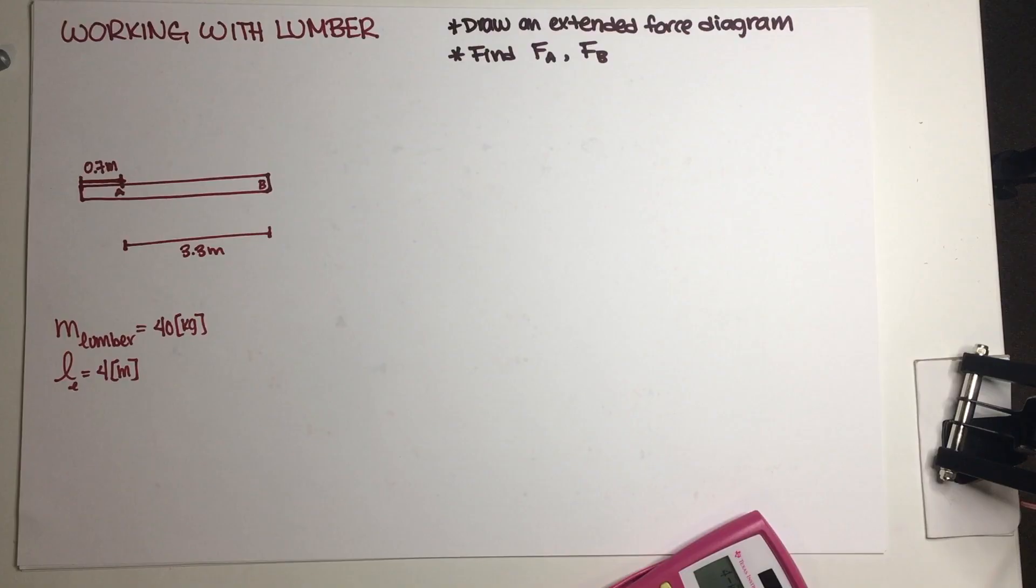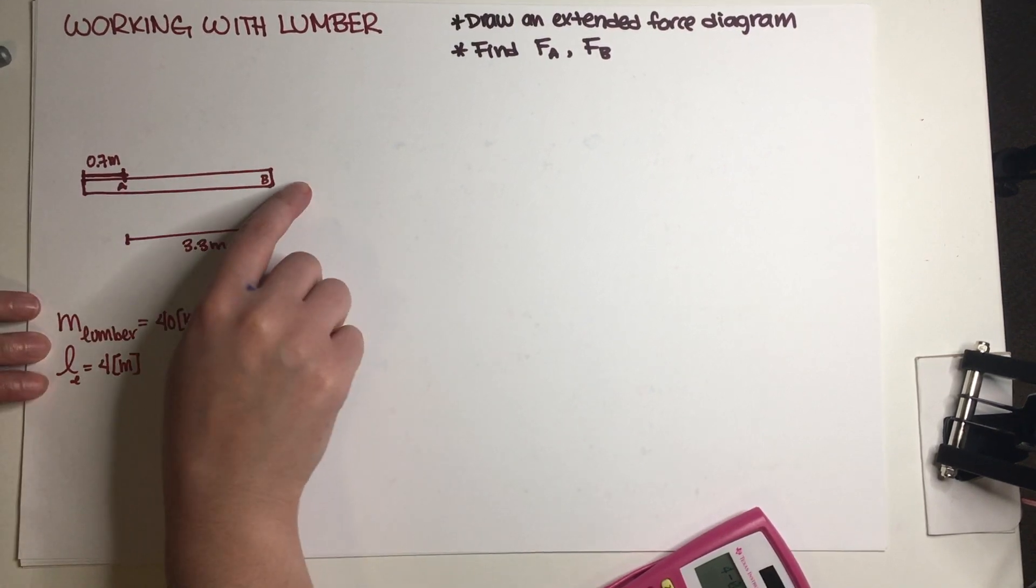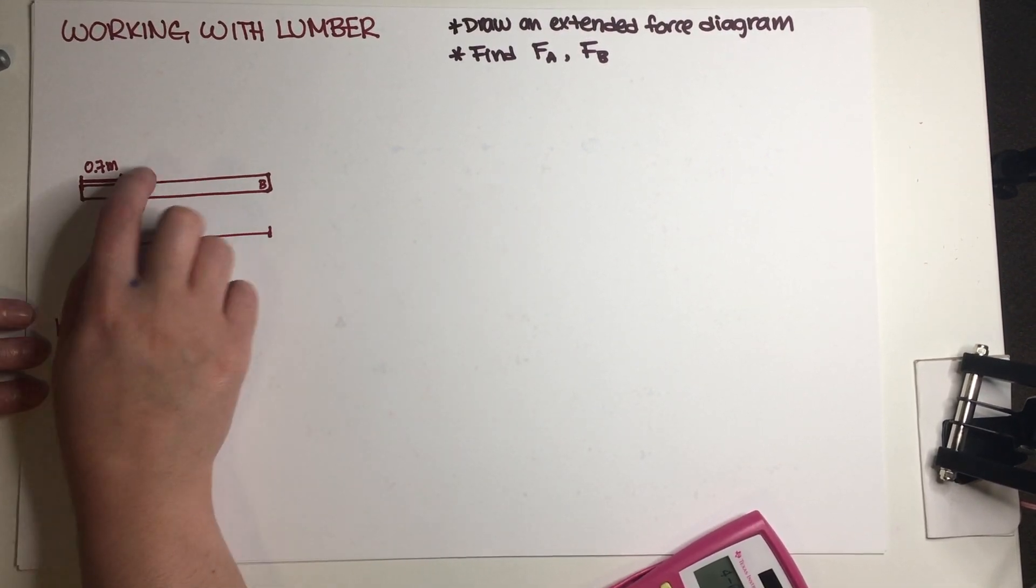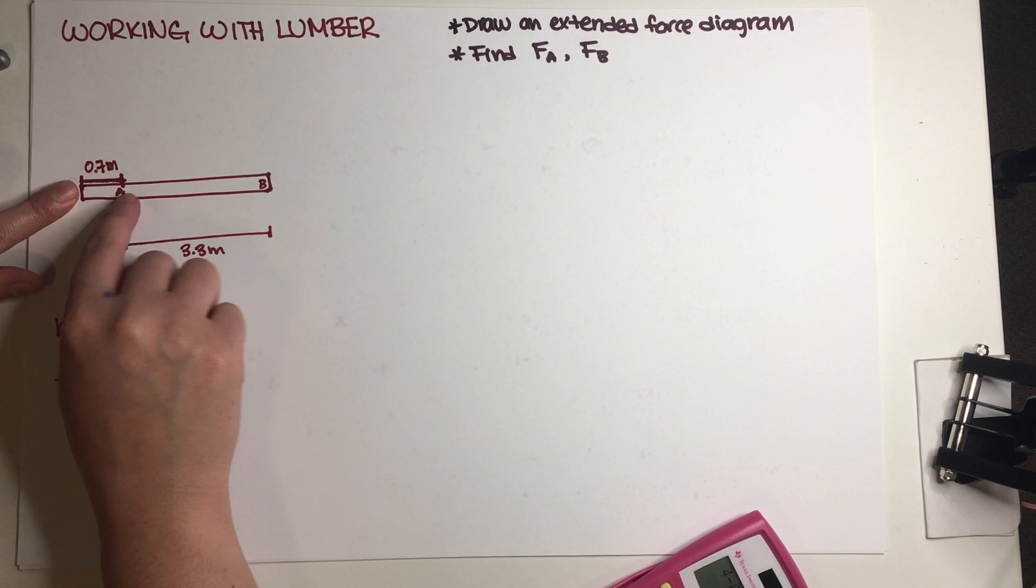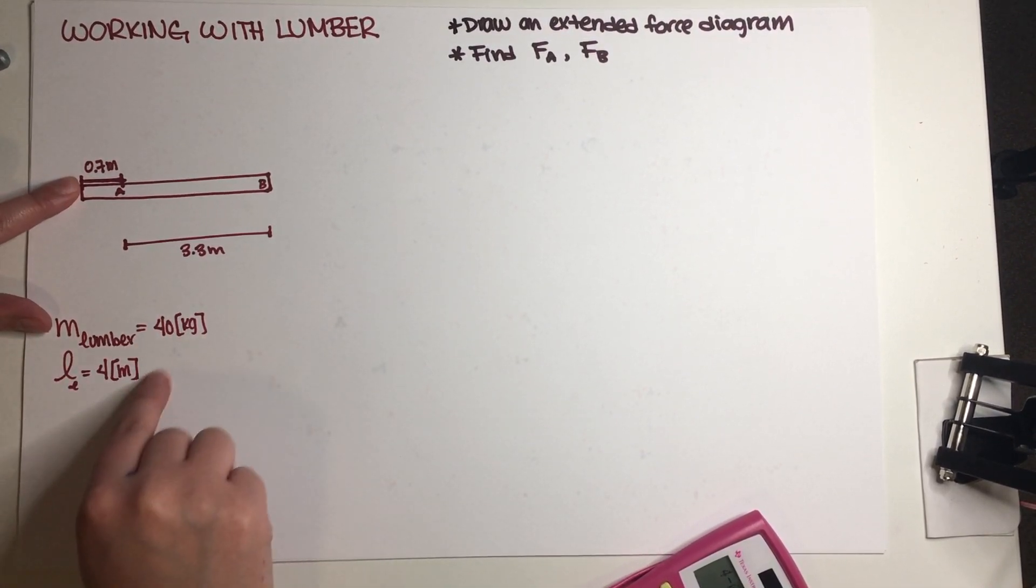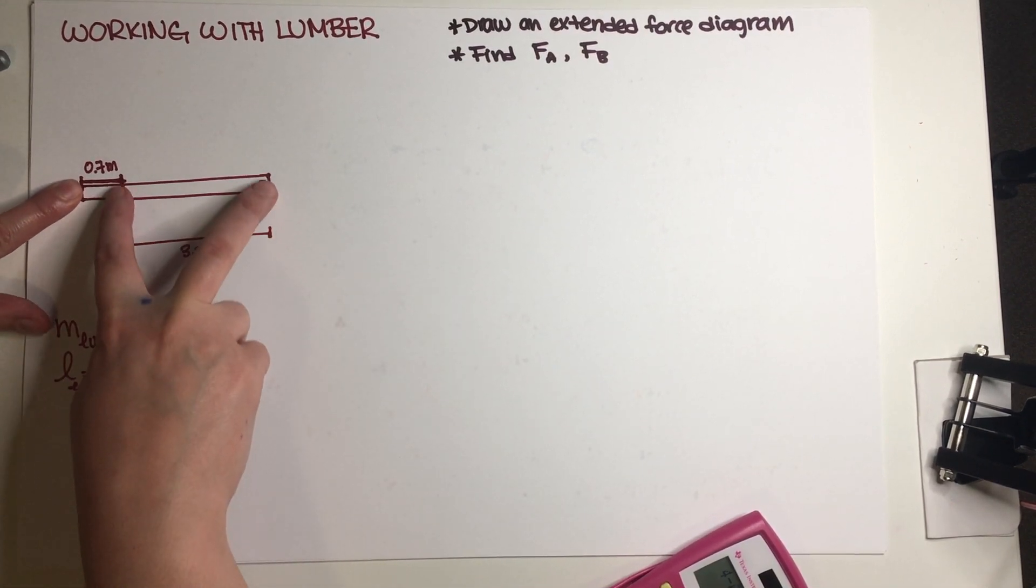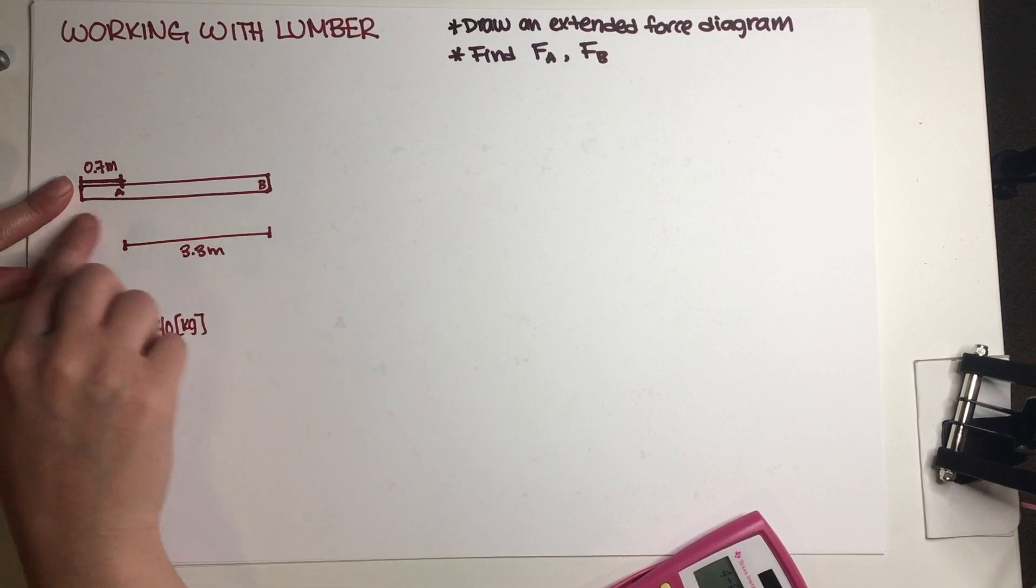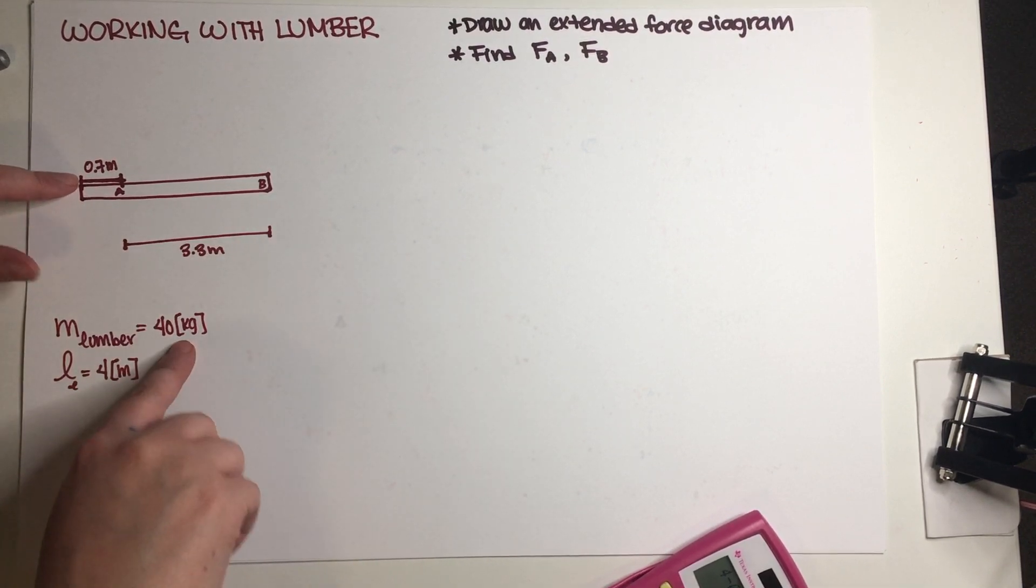Okay, so as you can see I have everything that's necessary for us to solve this problem here on my notes. So I have the lumber piece right here and I do have our measurements, so this is 0.7 meters from the left. Also we were told that the entire length of the lumber is 4 meters, which means that this distance from A to B is equal to 3.3 meters so that the entire thing adds up to 4.